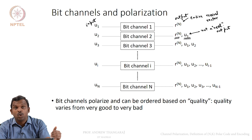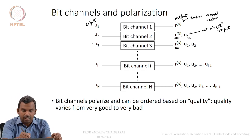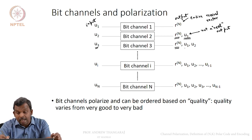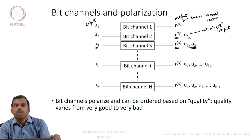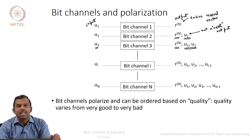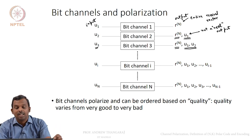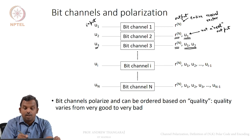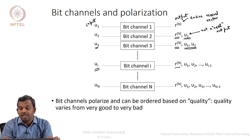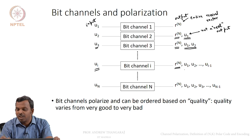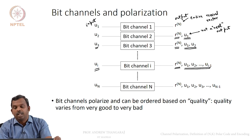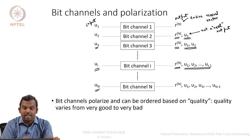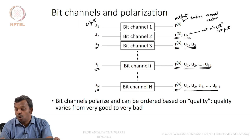The third bit channel has U3 as input, the entire RN as output, and I additionally assume both U1 and U2 are available at the output. These are not real outputs for now — imagine some benevolent person is giving me U1 and U2 at the decoder. Likewise, for the ith bit channel, I imagine I have the entire received vector plus all previous bits U1 through U(i−1). I proceed all the way up to the Nth bit channel, which has all received values and all previous bits.